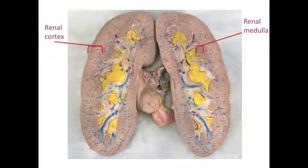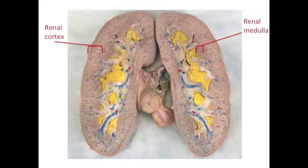Two major regions are identified: the renal cortex and the renal medulla. The cortex is cortical, and deep to that is the medulla. A helpful mnemonic: cortical cortex and middle medulla.